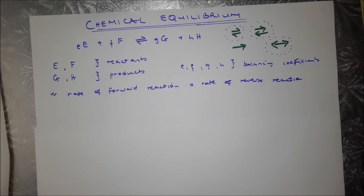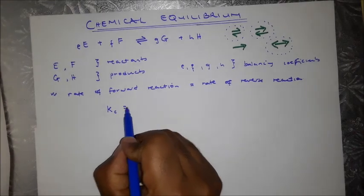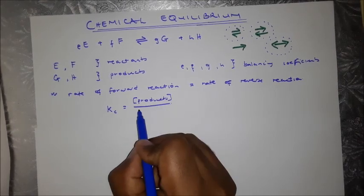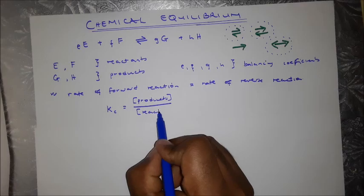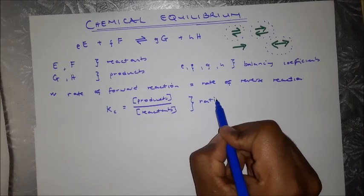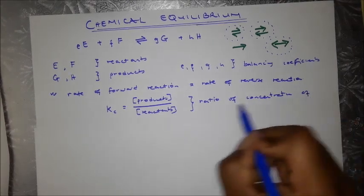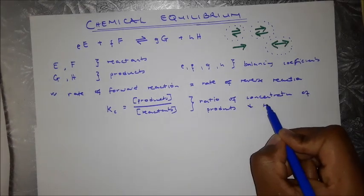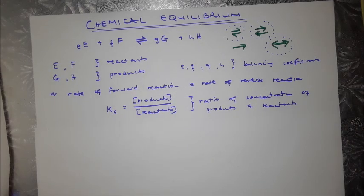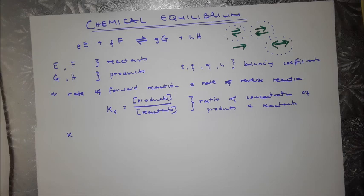As we go further, the reactants and products will have a certain concentration — an equilibrium concentration — and the ratio of those concentrations is depicted by what we know as Kc. Kc is the concentration of products divided by the concentration of reactants. You might also see square brackets, which stand for concentration.